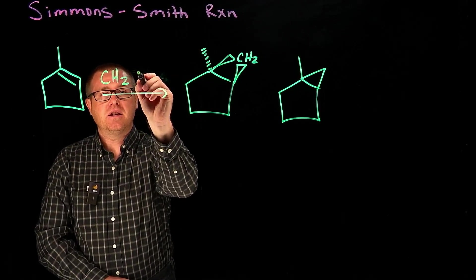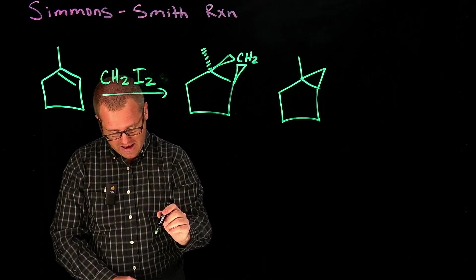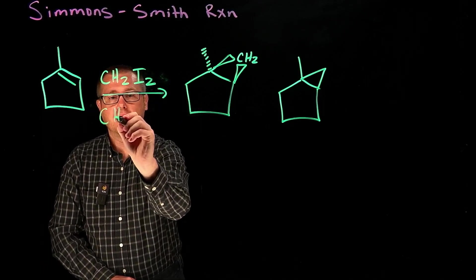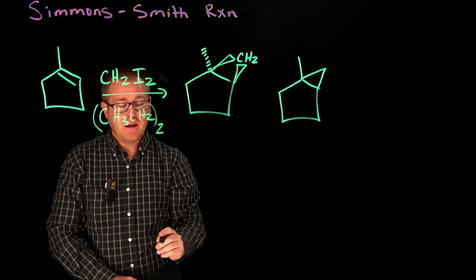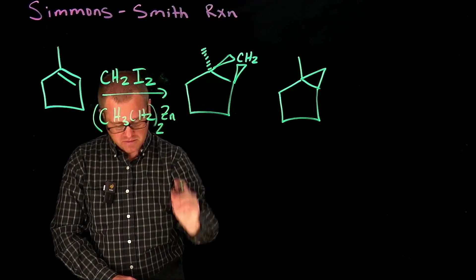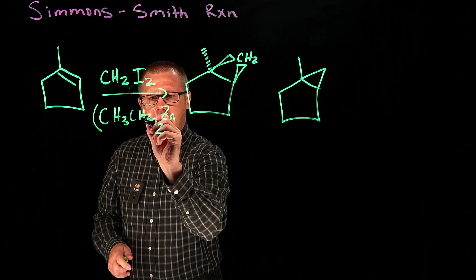And so what we have here, CH2I2, and then we have (CH2CH2)2Zn like that. Now when we take these reagents and add them together, we're going to get the same product.